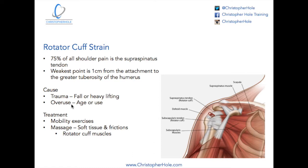Or, what is maybe more common, is overuse. That could happen one of two ways: age — just because you're using your shoulder more as you're older — or repetitive use, doing a lot of repetitive movements that cause the elbow to go above the shoulder, which will squeeze the supraspinatus up into the clavicle and the scapula, or the acromioclavicular joint.